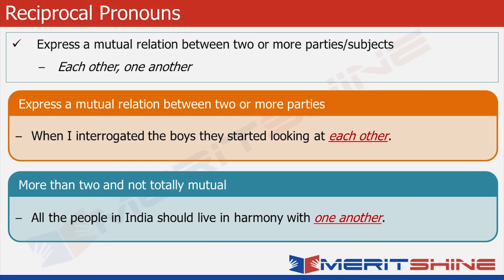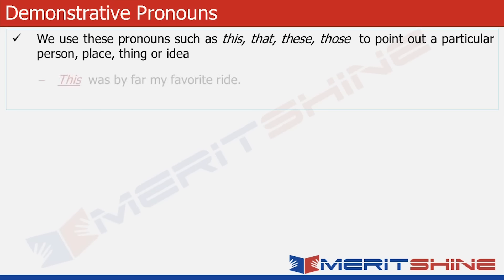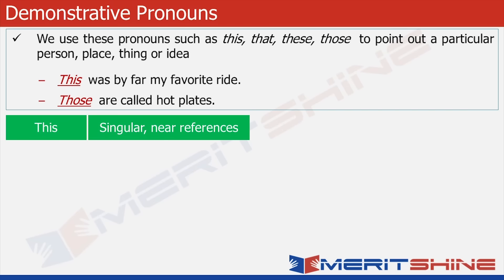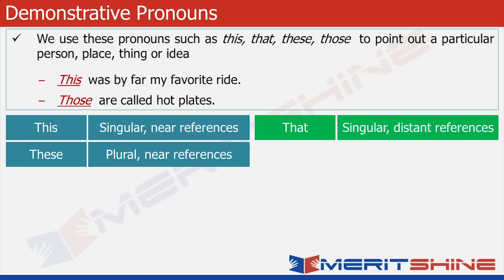Let's move to demonstrative pronouns. Demonstrative pronouns — this, that, these, those — are used to point out a particular person, place, thing or idea. This was by far my favorite ride. Those are called hot plates. 'This' is used for referring to singular nouns which are positioned close by. 'These' is used for plural nouns with near references. 'That' is used with singular nouns with distant references.